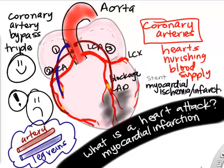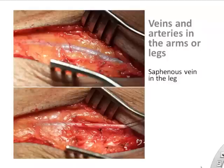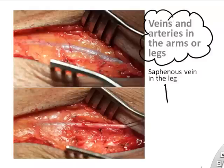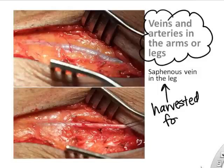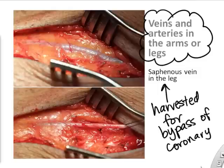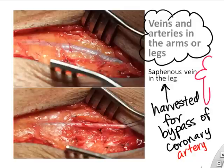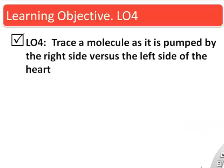Coronary artery bypass surgery involves sewing on blood vessels to bypass blockages. Sometimes arteries or leg veins are used — specifically the great saphenous vein. The surgery on your leg to harvest that vein might actually be more of a pain than the surgery on your heart.